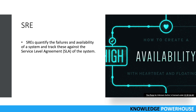Whenever failures occur, we quantify them and measure the availability of the system to see whether it has been reduced. We track these against our service level agreement. Based on that we can report that our system is highly available — for example, 99.997% of the time — and determine whether there has been an SLA breach.